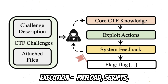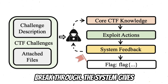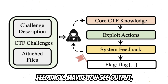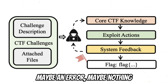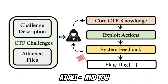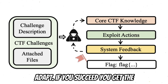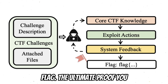Next is execution — payloads, scripts, toolkits, whatever it takes to break through. The system gives feedback. Maybe you see output, maybe an error, maybe nothing at all. And you adapt. If you succeed, you get a flag — the ultimate proof you own the challenge.